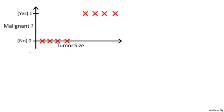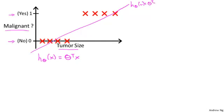So how do we develop a classification algorithm? Here's an example of a training set for a classification task for classifying a tumor as malignant or benign. And notice that malignancy takes on only two values, zero or no, one or yes. One thing we could do given this training set is apply the algorithm that we already know, linear regression, and just try to fit a straight line to this data.